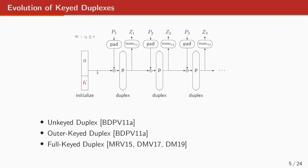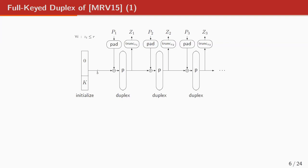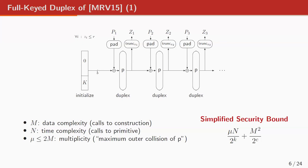There have been three main works investigating the full-keyed duplex. The first was by me, Rea Niterbach, and Visarum in 2015. Then Daemen, me, and Gilles Van Asch in 2017. And then de Browning and me in 2019. The first work derived a rather simple security bound. If an attacker makes N primitive queries and M construction queries (M duplex calls), the security bound is roughly mu times N over 2 to the K, plus M squared over 2 to the C, where mu is a multiplicity term.